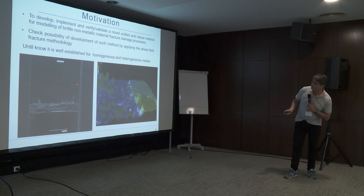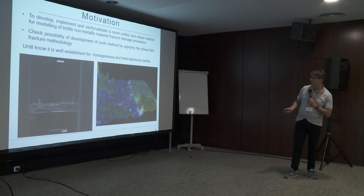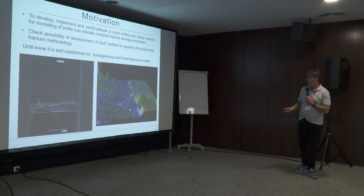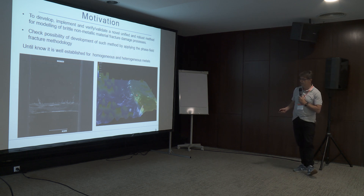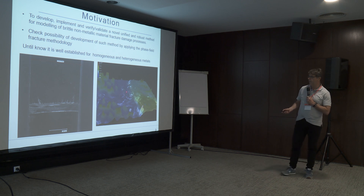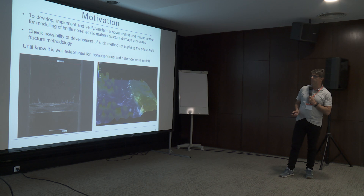It is very hard to see, but there is the crack tip here. It is the notch, and when you have unstable fracture behavior, you get such propagation from the notch. This is, by microscope, the unstable crack propagation.